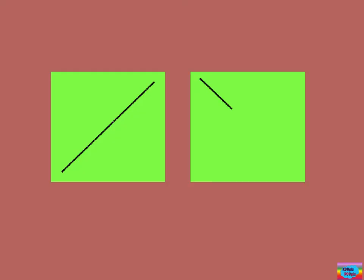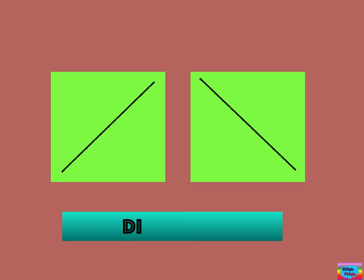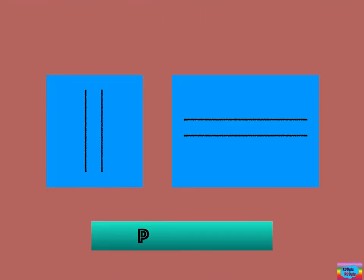This is called a diagonal line. This is called a parallel line. These are lines that do not touch each other.